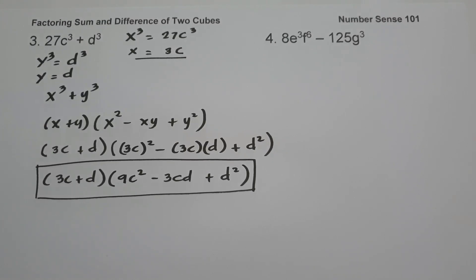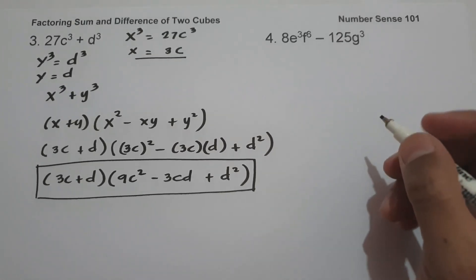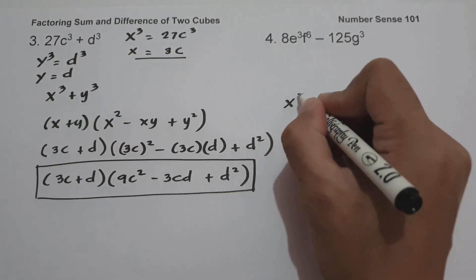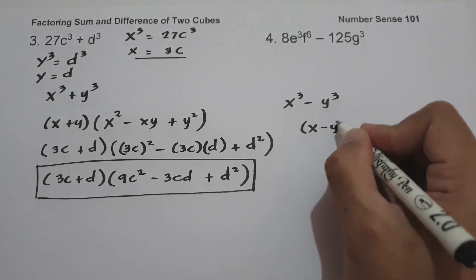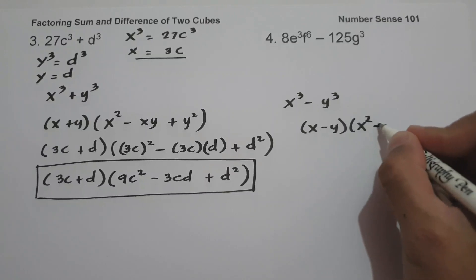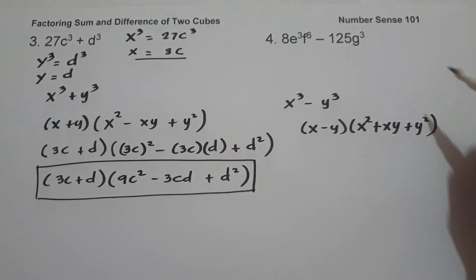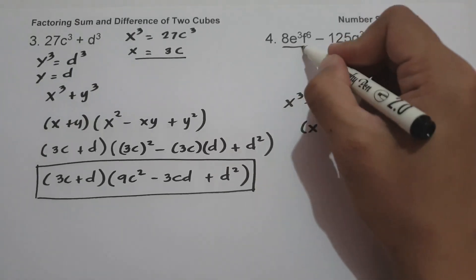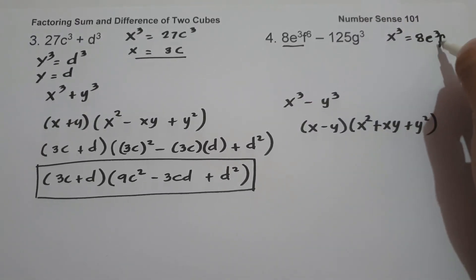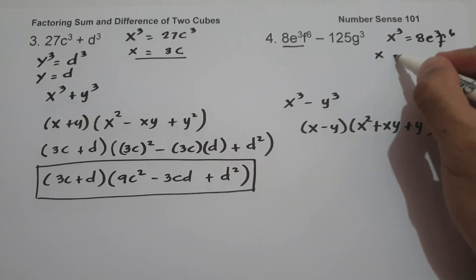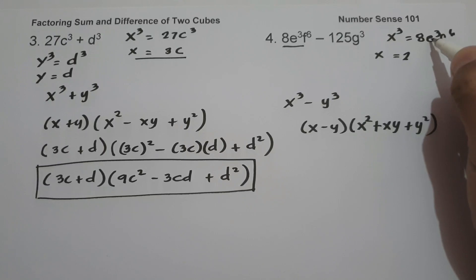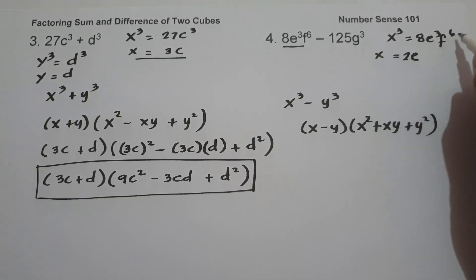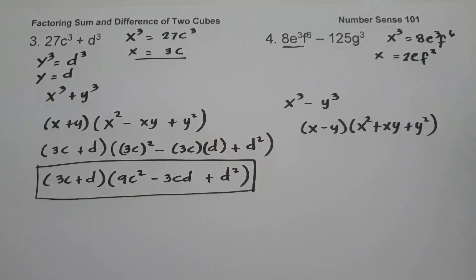On number 4, we have 8e³f⁶ − 125g³. This is written in the form of x³ − y³, and x³ − y³ = (x − y)(x² + xy + y²). The value of x³ is the first term, 8e³f⁶. To find x: the cube root of 8 is 2, the cube root of e³ is e, and the cube root of f⁶ is f², so x = 2ef².